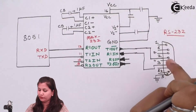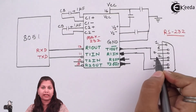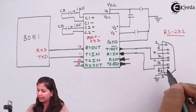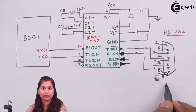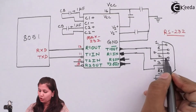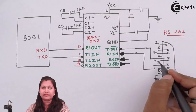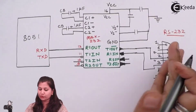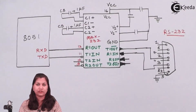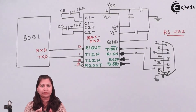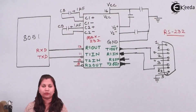In the RS-232 9-pin connector, pin number 2 is the Transmit Data pin, pin number 3 is the Receive Data pin, and pin number 5 is grounded. This is how the RS-232 and 8051 microcontroller are connected with each other, communicating via the MAX232 line driver.